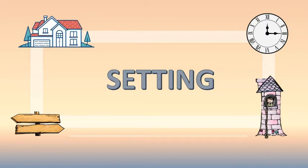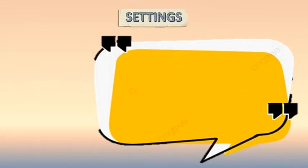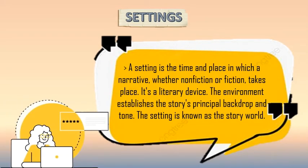The first literary technique is the setting. A setting is the time and place in which a narrative, whether non-fiction or fiction, takes place. It's a literary device. The environment establishes the story's principal backdrop and thought. The setting is known as the story world. With settings, we can understand the narrative more, and without settings, a scene or an event in a story cannot happen.